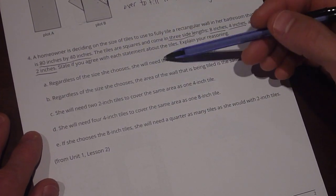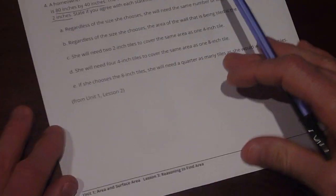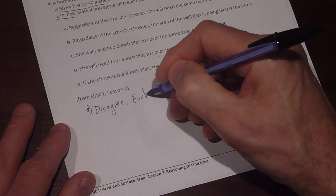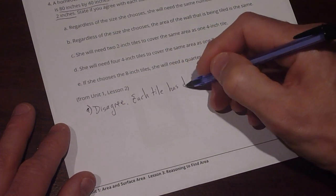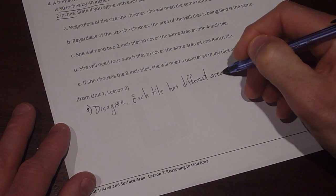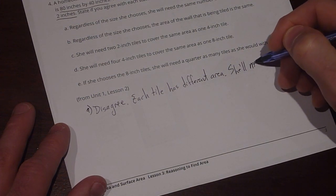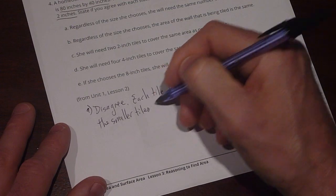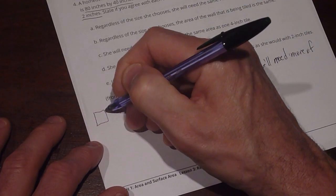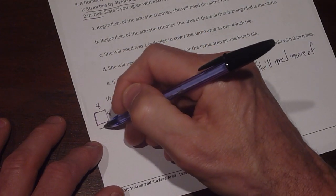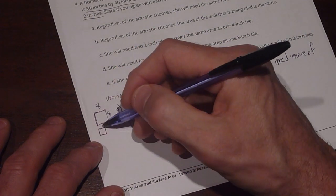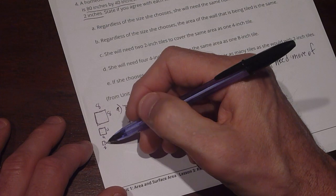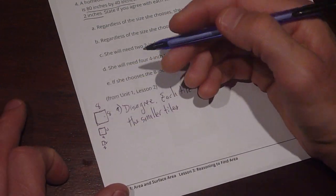Okay. Now, first for A, regardless of the size she chooses, she will need the same number of tiles. Agree or disagree. Well, down here I'm going to write A. I disagree with that. And the reason why is that each tile has a different area. She will need more, more of the smaller tiles. For example, the 8 inch tiles will cover about this much space. If we say this is 8 by 8. The 4 inch tiles will cover half of that. Excuse me, one quarter of that because it takes 4. 1, 2, 3, 4 to make up one of those. This is 4 by 4. And then the 2 inch tiles are even smaller. This is 2 by 2. And the 2 inch tiles, we're going to need 16 of those to cover just one 8 inch tile. So definitely not the same.